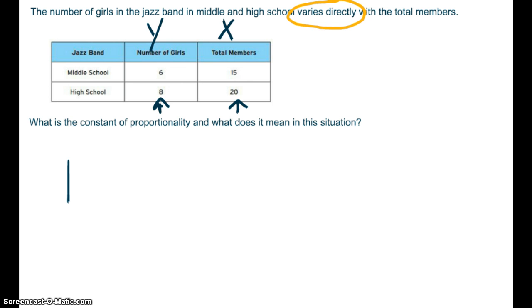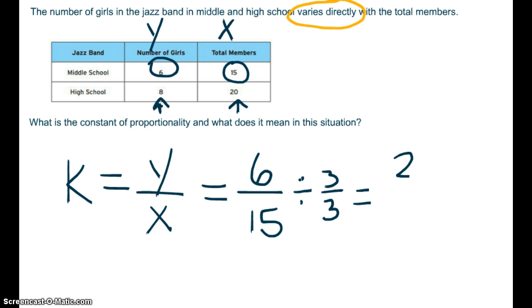So when I ask you for the constant of proportionality, I want you to write K equals Y divided by X. And then all we're going to do is substitute in our Y values and our X values. So in this situation, 6 will be divided by 15. And we can simplify that by dividing by 3 thirds. So our simplified constant is 2 fifths.